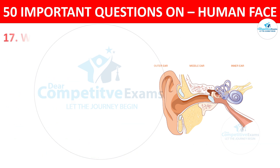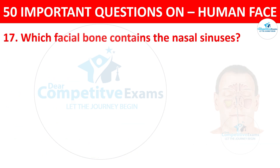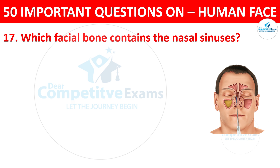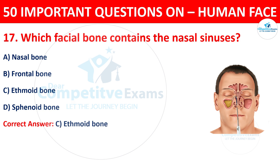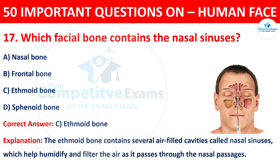Question number seventeen: which facial bone contains the nasal sinuses? The options are nasal bone, frontal bone, ethmoid bone, or sphenoid bone. The correct answer is C, ethmoid bone. The ethmoid bone contains several air-filled cavities called nasal sinuses, which help humidify and filter the air as it passes through the nasal passages.